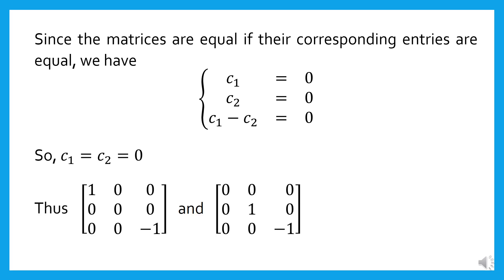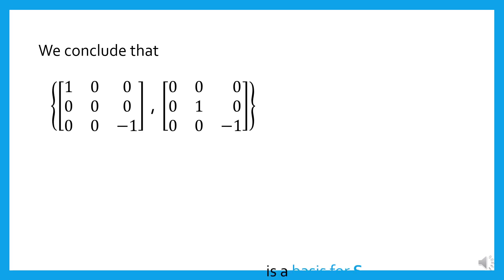Thus, the two matrices are linearly independent. We conclude that the set formed by the two matrices is a basis for S. So dimension S equals two.